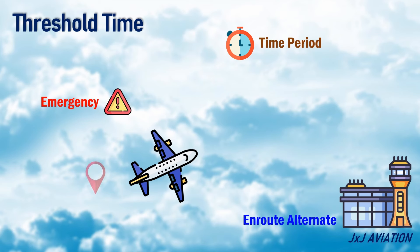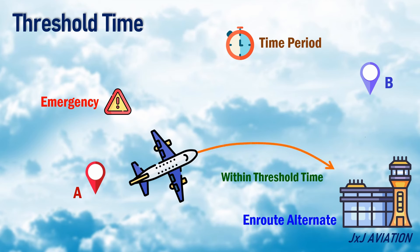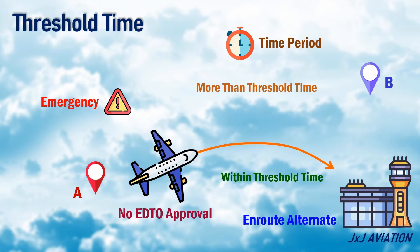Let's consider an aircraft flying from A to B. On this route, if the en-route alternates are available within the threshold time, the aircraft does not require an EDTO approval. However, if the diversion time to an en-route alternate is more than the threshold time, an EDTO approval is required.